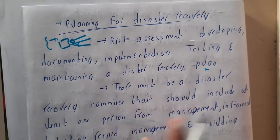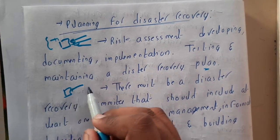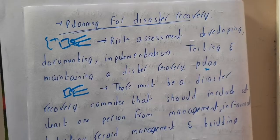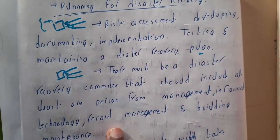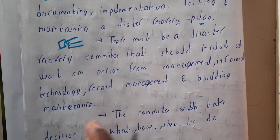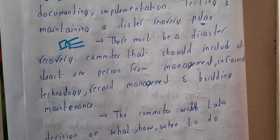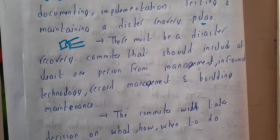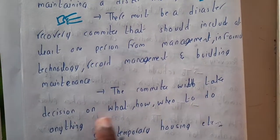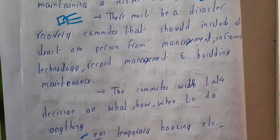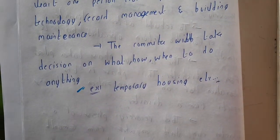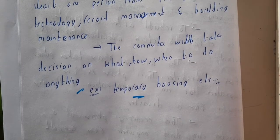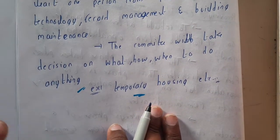There must be a disaster recovery committee that includes members from each department of the organization. Departments may include management, infrastructure, record management, and building maintenance. A representative from each department should be on the committee because they have the clearest understanding of what went wrong and how. The committee decides what to do, how to do it, and when to do it — for example, arranging temporary housing for displaced people after a building collapse.